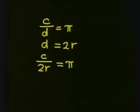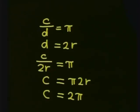To get a formula for the circumference, we can multiply both sides of the equation by 2r. This gives us C is equal to pi times 2r. And we can write this as C is equal to 2 pi r.